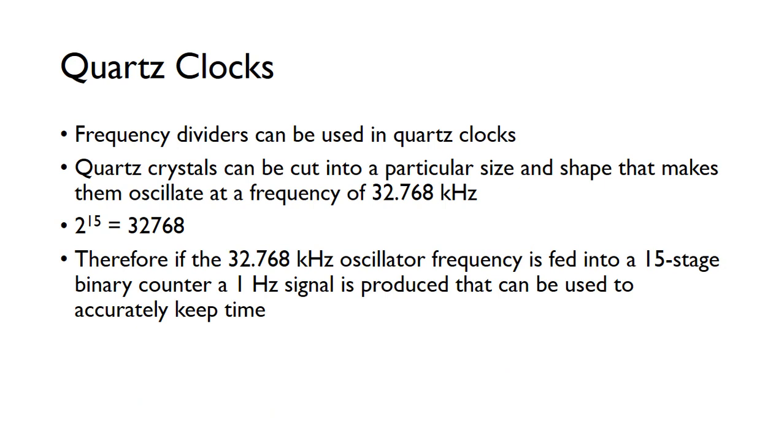These types of frequency dividers are often used in quartz clocks. If you get a quartz crystal and cut it into a particular size and shape, that makes it oscillate at a natural frequency of 32.768 kilohertz. This value seems to be a pretty random frequency, but if you consider that 2 to the power 15 gives you this value...